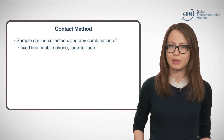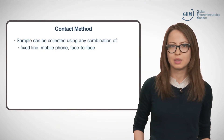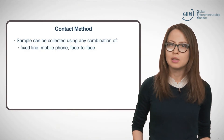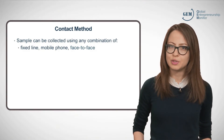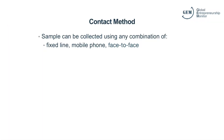One important aspect of the methodology that can vary among teams is the contact method. Data can be collected using any combination of face-to-face, fixed-line, or mobile phone sampling. A few teams are also collecting some data online, but due to a lack of nationally representative web panels in many countries, this is not yet a common option. The choice of contact method is based on feasibility, budget, and the possibility of bias.